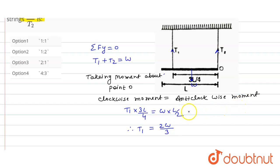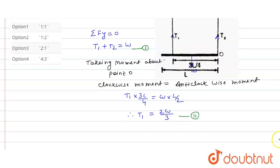Let's assume this is equation first and this is equation second. Now put the value of T1 in equation 1. So when we put here, T2 is equal to W upon 3.